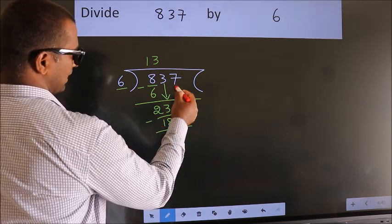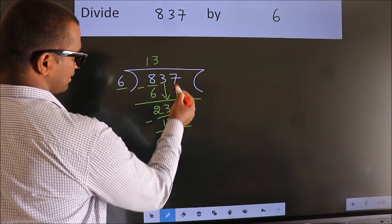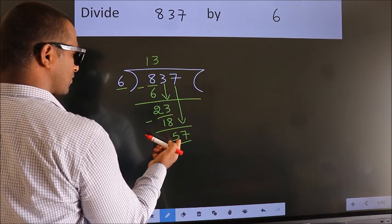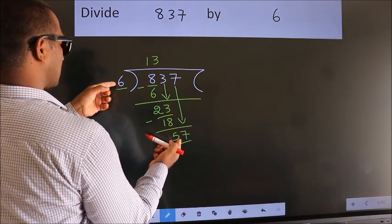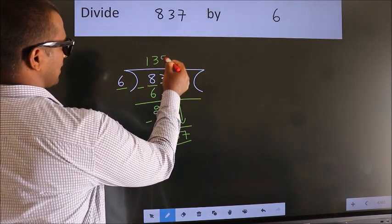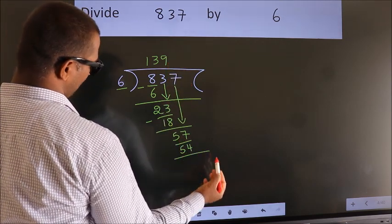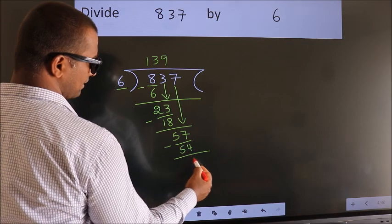After this, bring down the next number. So, 7 down, making 57. A number close to 57 in the 6 table is 6 times 9 is 54. Now we subtract. We get 3.